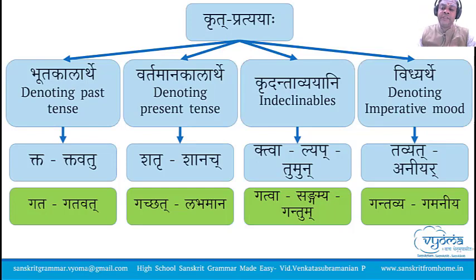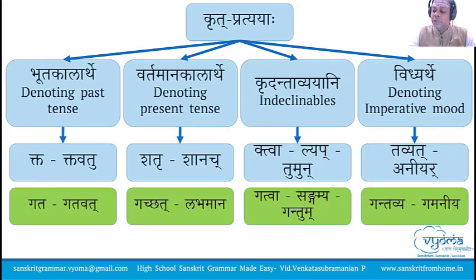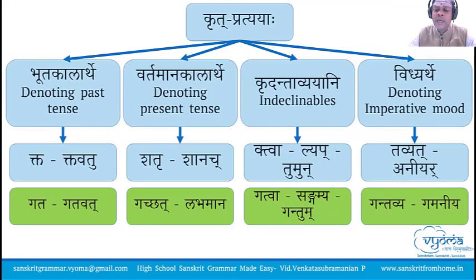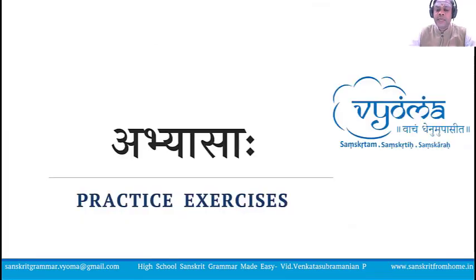The pratyayas we will be studying are: kta and tavatu which denote past tense; shatru and shanach which denote vartamana kala or present tense; tavyat, aniyar, and ya which denote imperative mood; and kridanta avyayas tva, lepa, and tumun. So about nine to ten pratyayas we will be studying in this course out of the 140 pratyayas total. These are very important pratyayas for sentence construction at the beginner level.